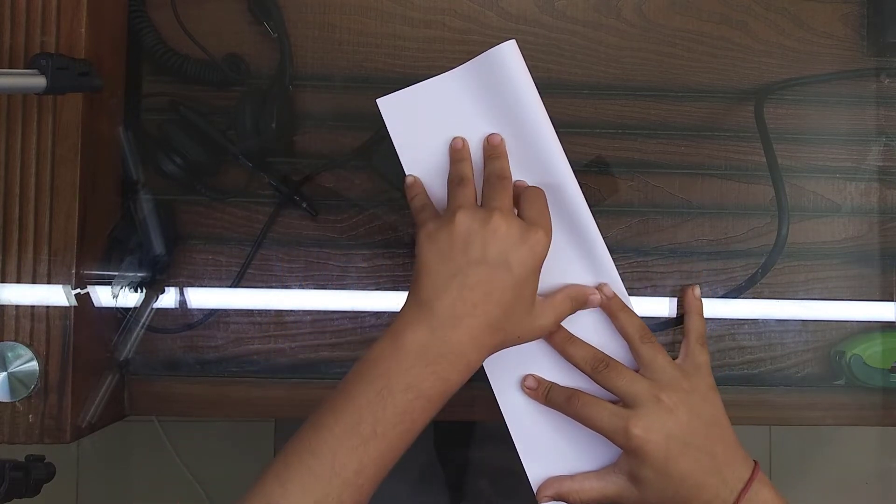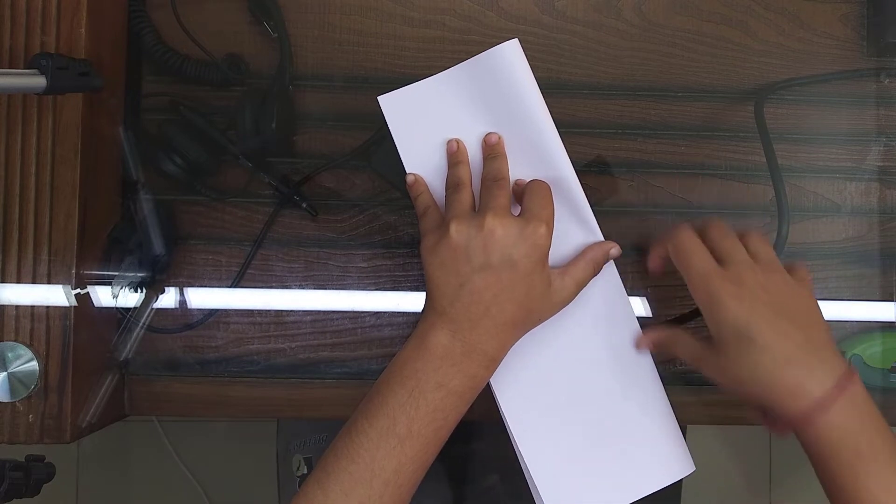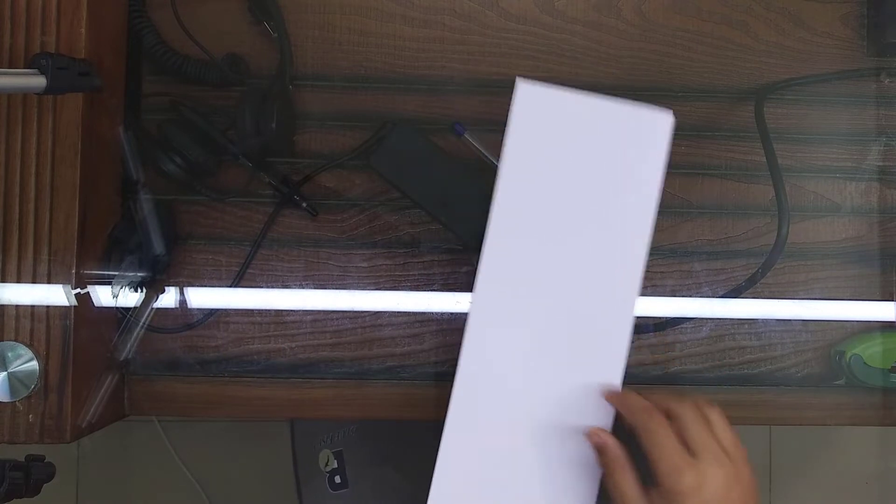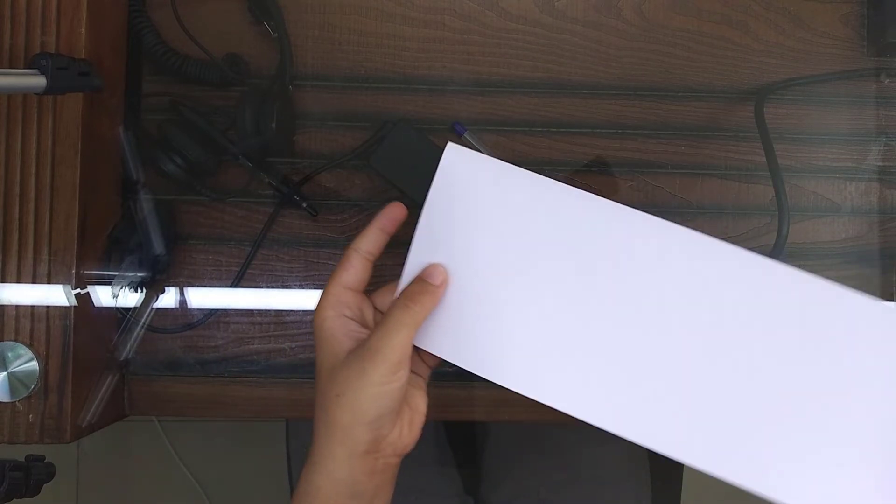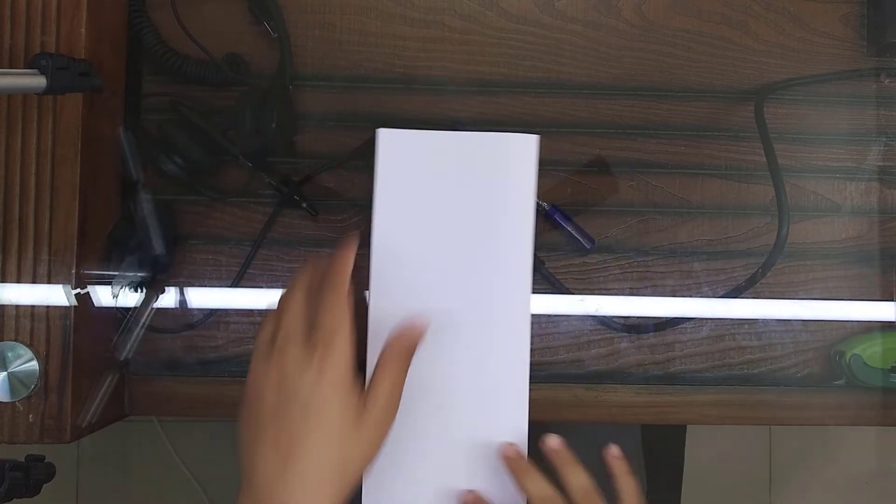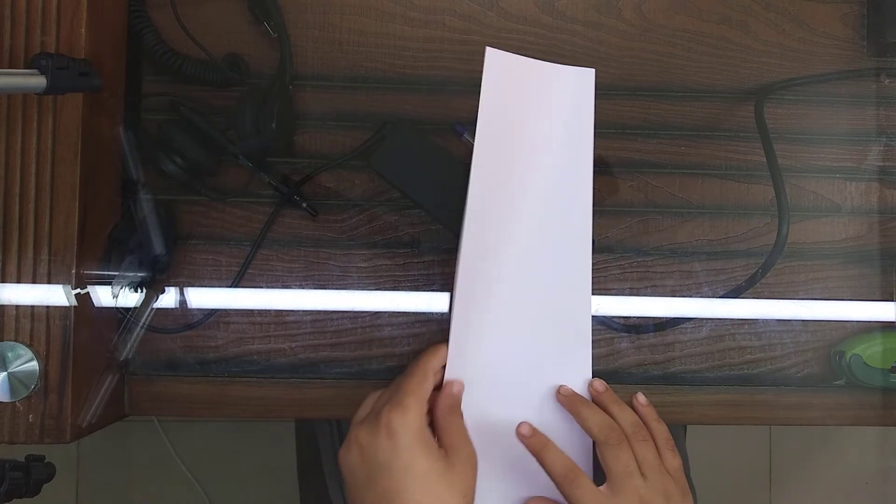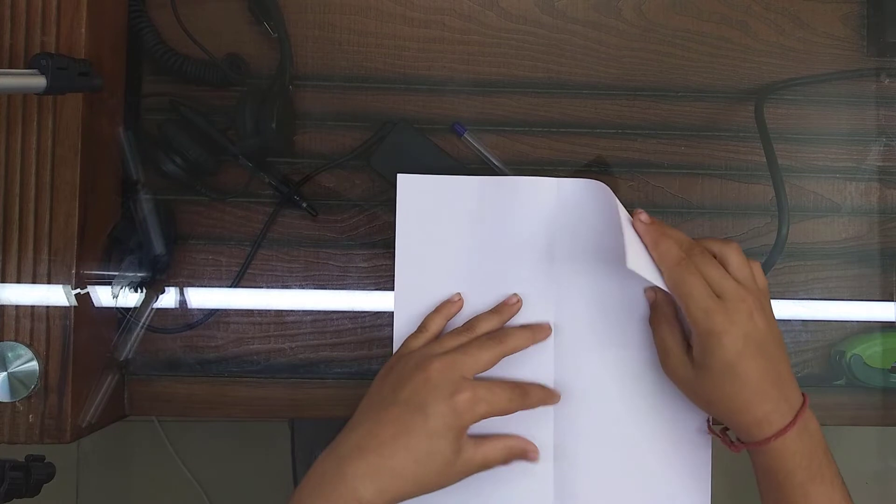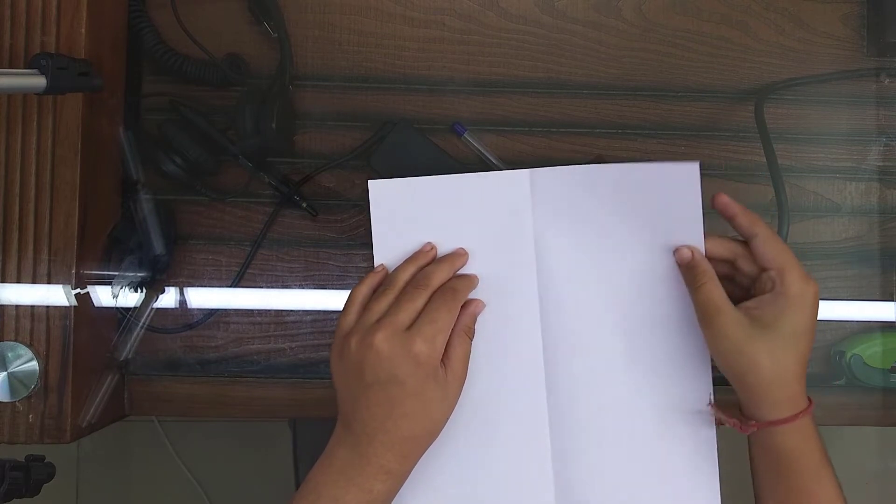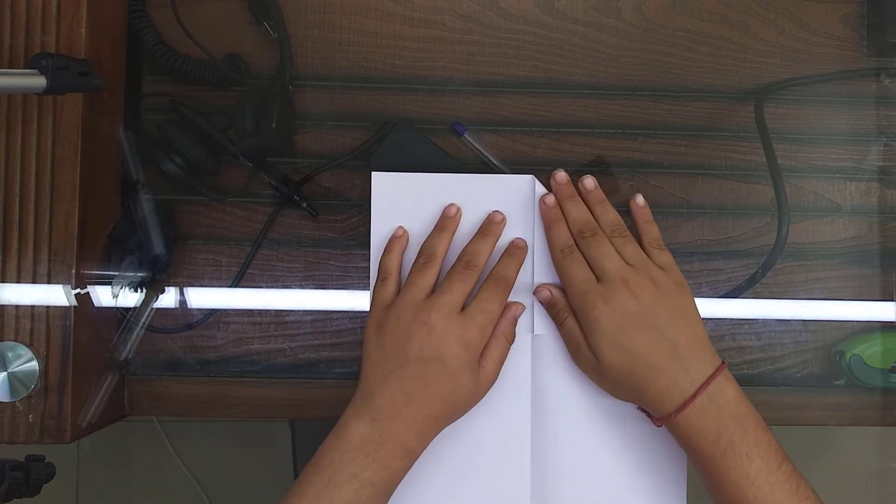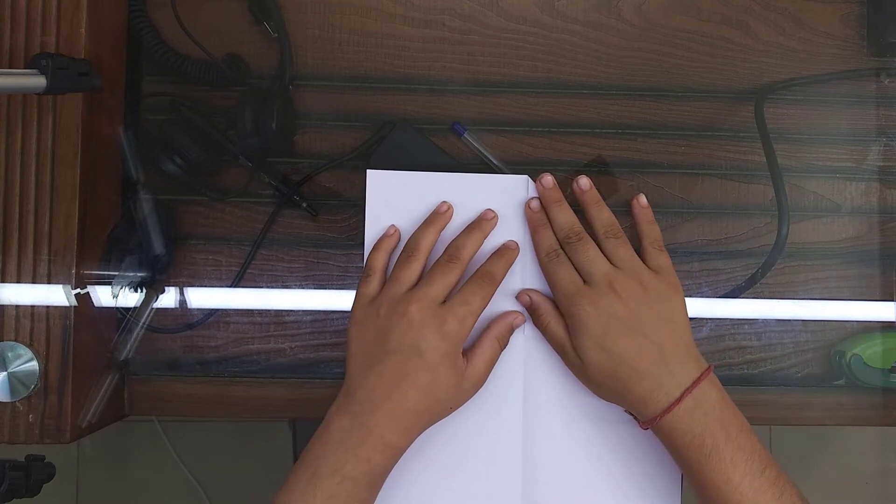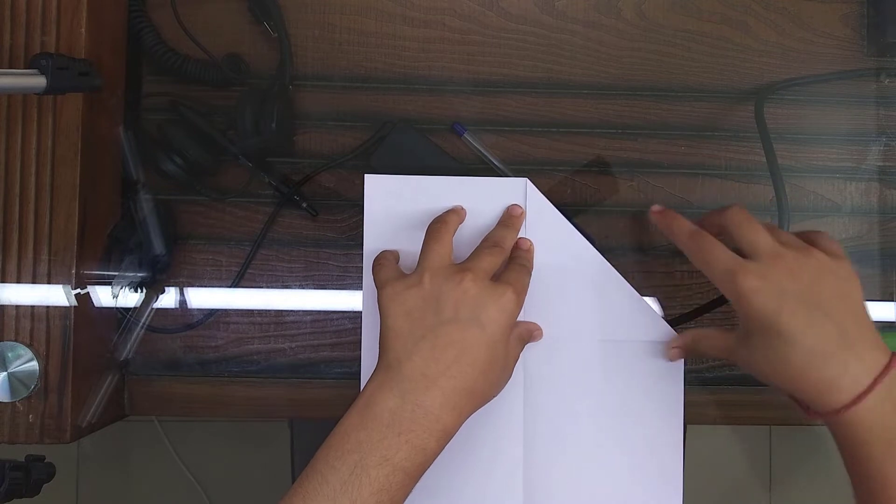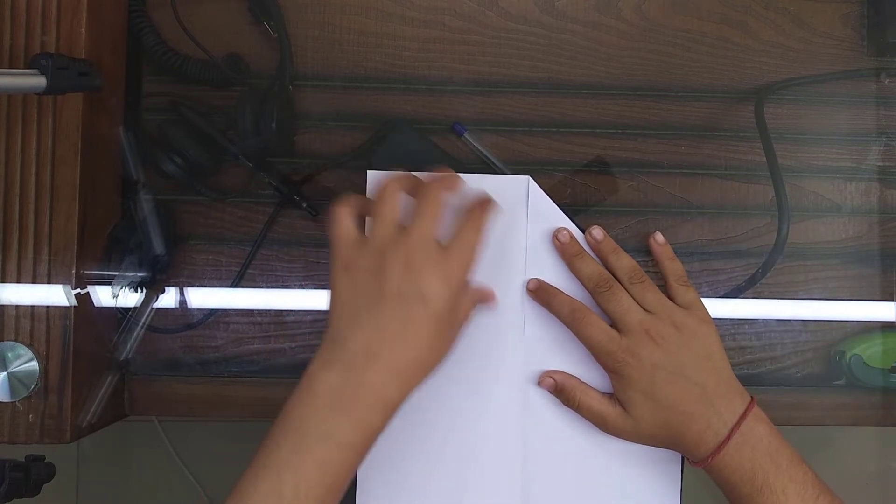And then press. Look, now you should have a result of this. Now open this fold for just a crease. Now take this part, this corner, and match it to the line, to the crease that you made, from both sides.